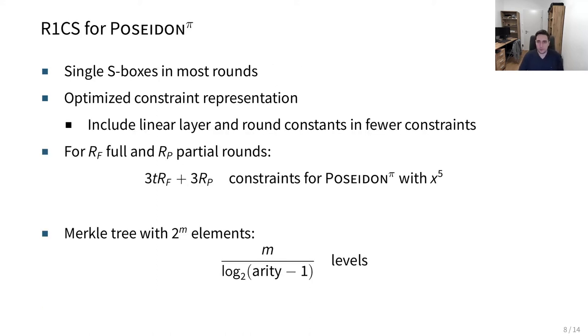For an example to compare the efficiency, we can take a look at the number of rank 1 constraints. Essentially, this is a system of quadratic equations which represents the whole construction. Here we can exploit the fact that we have single S-boxes in most of our rounds, so this is already very efficient. We can even derive an optimized representation of our constraints by basically including the linear layer and also round constants in much fewer constraints.